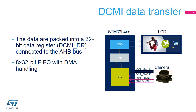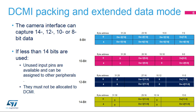In order to limit bus contention in the system and avoid missing data, despite the high data rate of this interface, the received data are packed in a FIFO buffer. Depending on the interface size — 8, 10, 12, or 14 bits — 2 or 4 data items are stored in a single 32-bit word. Once a complete 32-bit word is available, it is transferred by DMA to the memory. This allows reduction of the bus bandwidth used by the DCMI, even for high-speed cases.